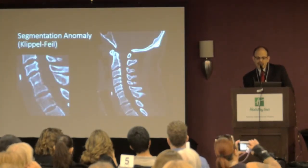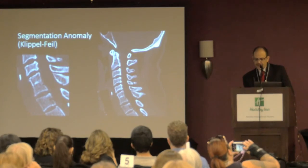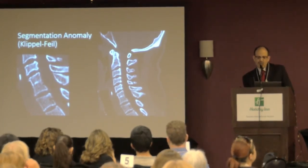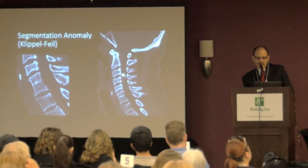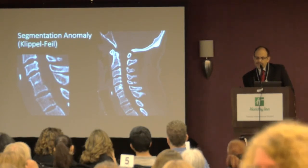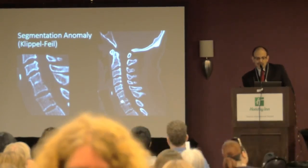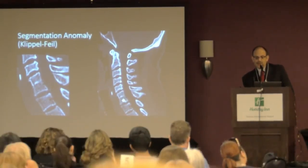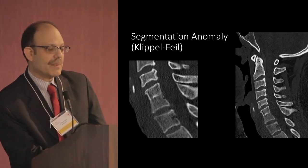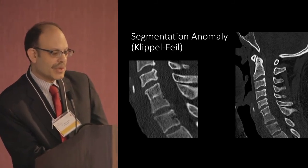Segmentation anomalies: there are a number of ways bones can grow abnormally. In normal bones, the pattern is bone, disc, bone, disc. In this condition, one of the discs didn't form properly. It can generate mechanical problems and be associated with pain.